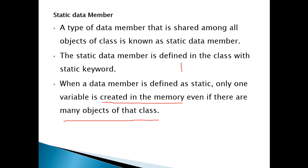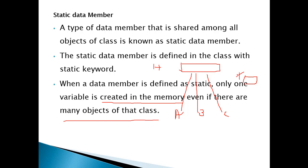Suppose we have a class called Hello. For this class, we want to create three objects: A, B, and C. These are three objects created for the Hello class. And we declared a data member x as static. This means x will share its memory location with all related objects. C can access this memory location, B can also access it, and A object can also access this memory location. So all objects use the same memory location of the x variable.